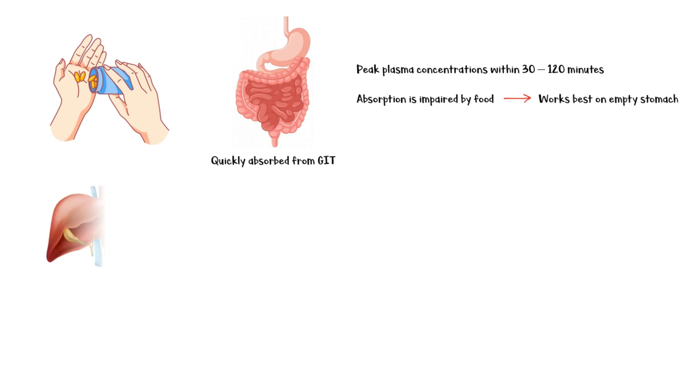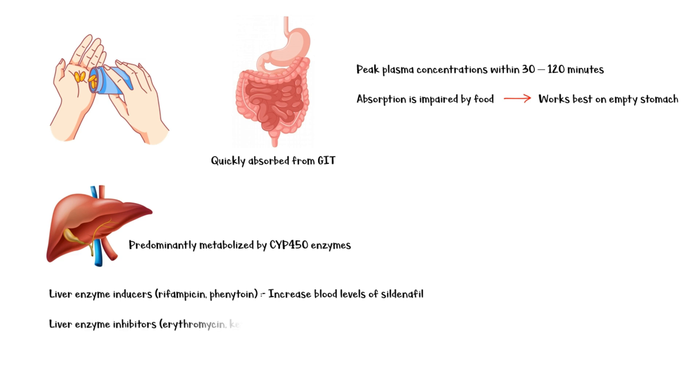It is predominantly metabolized by cytochrome P450 enzymes in the liver. Therefore, liver enzyme inducers such as rifampicin and phenytoin will increase the levels of sildenafil in blood, whereas liver enzyme inhibitors such as erythromycin and ketoconazole will decrease blood levels of sildenafil. The drug is predominantly eliminated in feces and to a much lesser extent in urine.